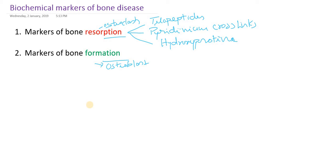When bone is continuously resorbed, there will be destruction of the bone and catabolism or breakdown of collagen. Telopeptides are products of collagen containing N-terminus and C-terminus. Similarly, pyridinium crosslinks are also a product of collagen which contains lysine and hydroxyproline. All these can be measured in serum as well as in urine.